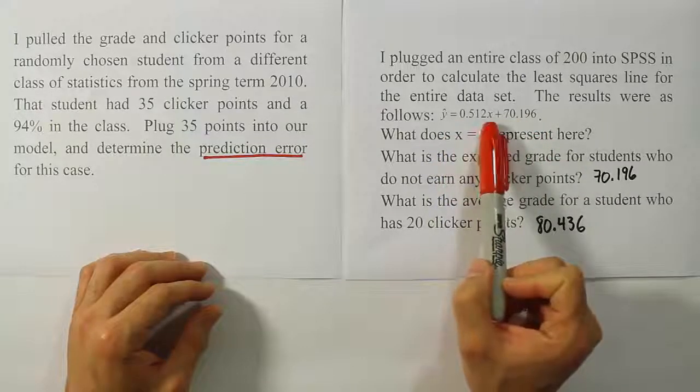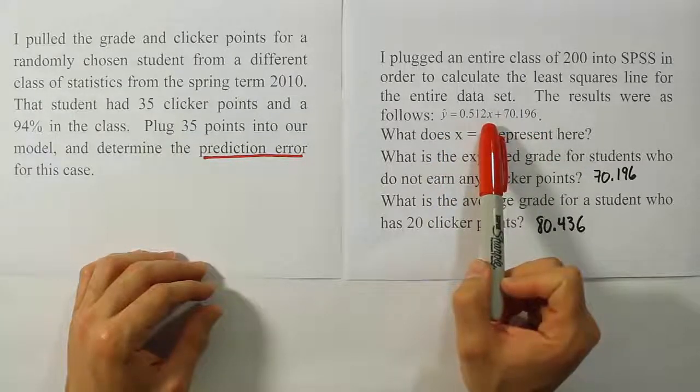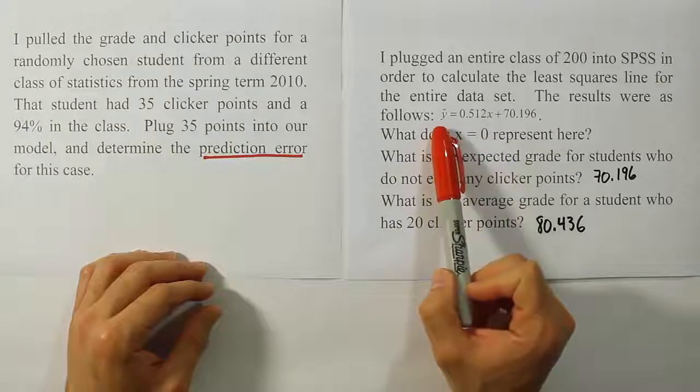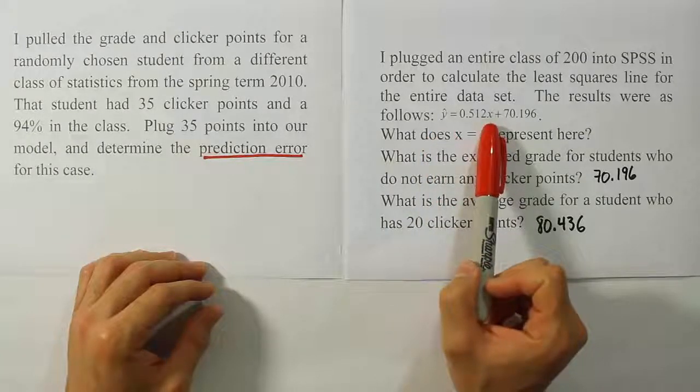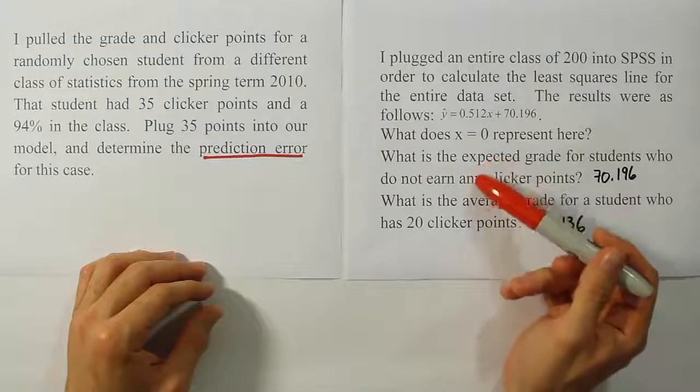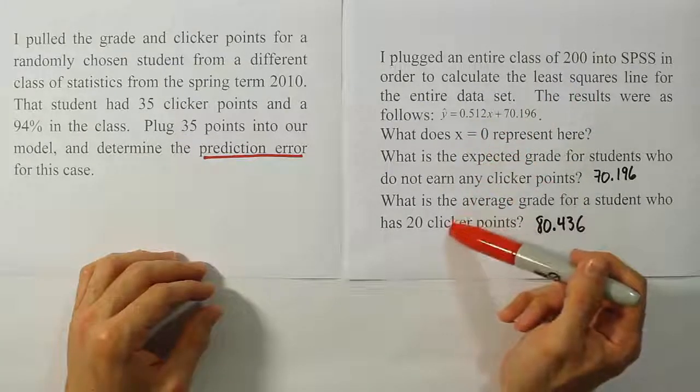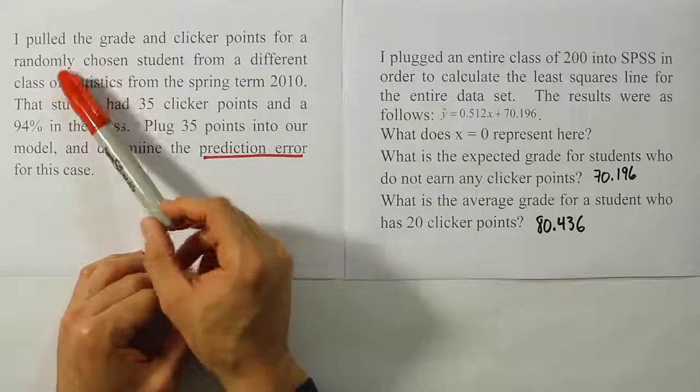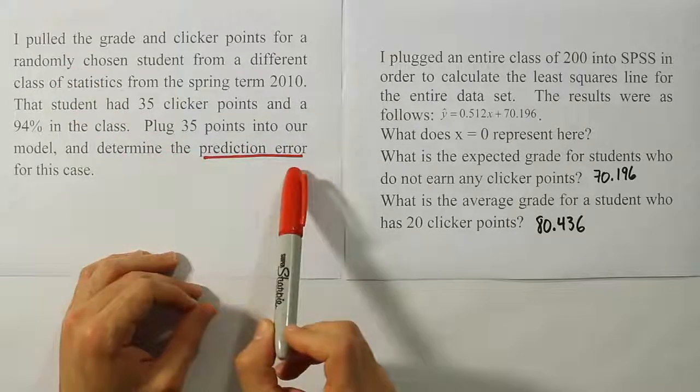And what that model consists of is an X value, which represents a student's clicker points, and a Y value, which represents the average grade you would expect for students who have that many clicker points. So we answered a bunch of questions about that here afterwards, and now we're here to answer a new question, which is a question about the prediction error.